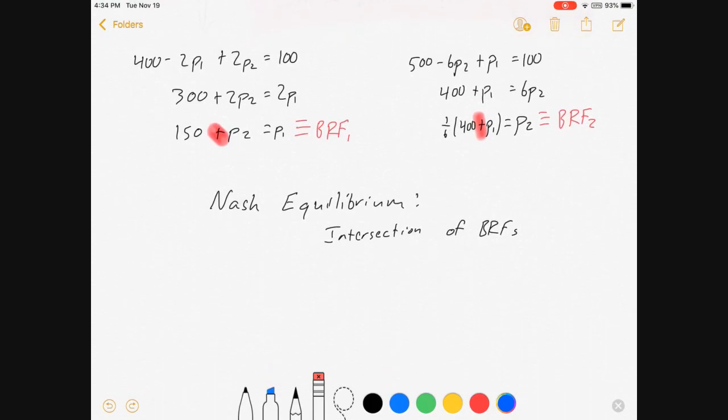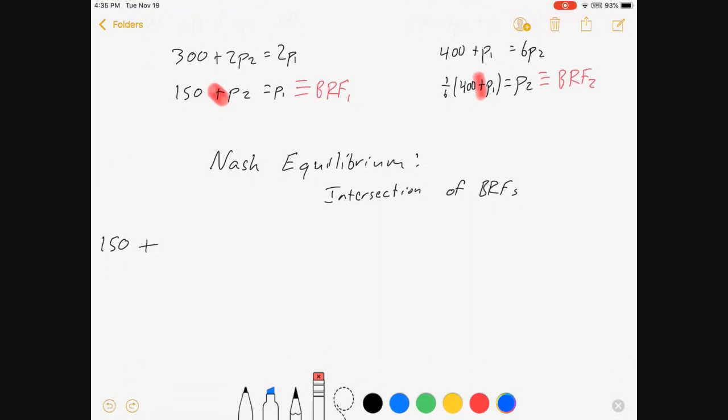So, our Nash equilibrium, as always, is the intersection of the best response functions. So find where these two things cross each other, and that will give you your Nash equilibrium prices for this Bertrand competition with differentiated products. So let's figure it out.